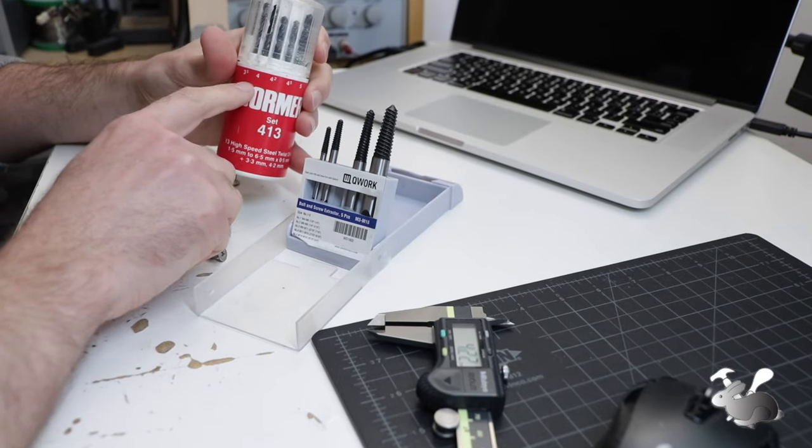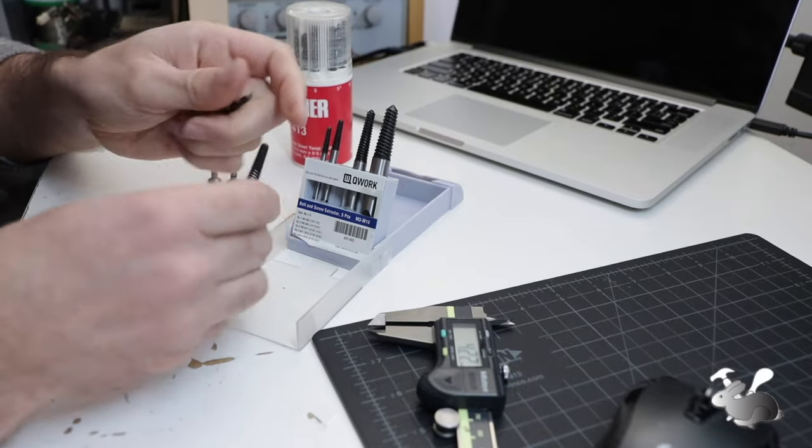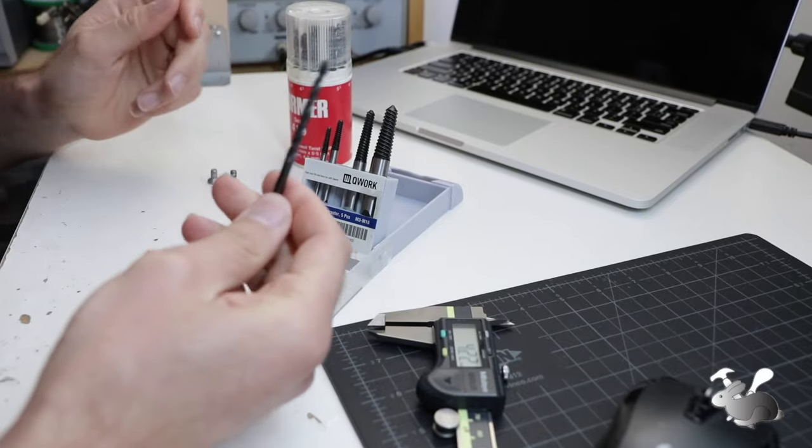So for example, let's see if I pick the 4, and I will get this. This is the 4 millimeter drill bit.